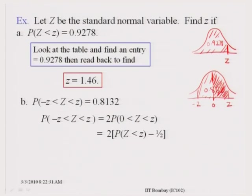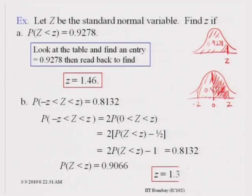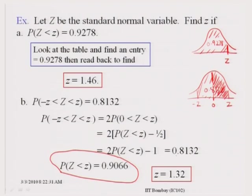We write this as the area on the left of Z minus 0.5, because the area on the left of 0 is 0.5 and we subtract that from the area on the left of Z. This gives us the required form: we look for 0.9066 in the body of the table, and thereby the value of Z is 1.32, again using a reverse calculation.